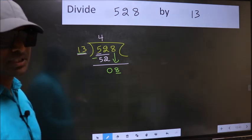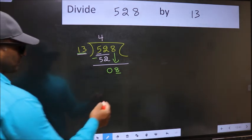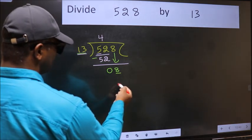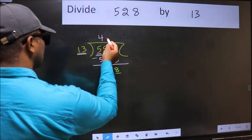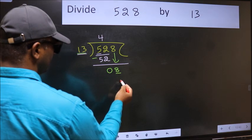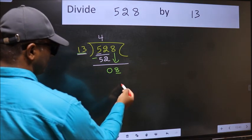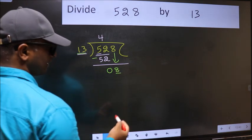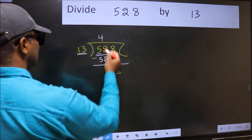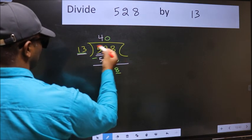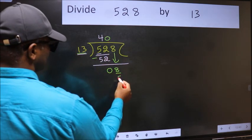Instead, what you should think of doing is which number should we take here. If I take 1, we will get 13. But 13 is larger than 8. So what we should do is we should take 0. So 13 into 0, 0.